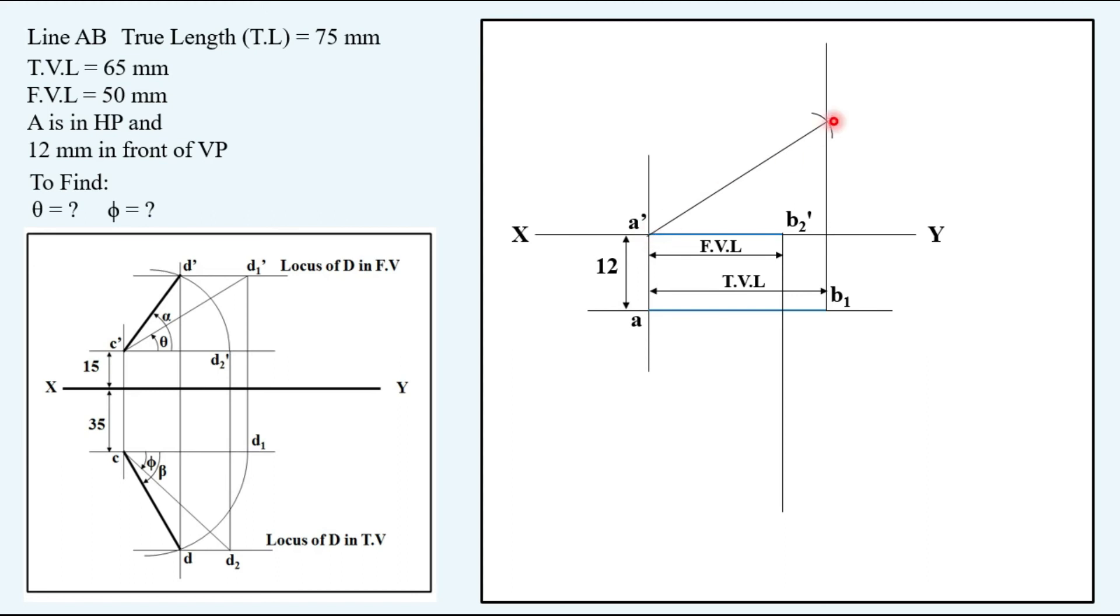Corresponding point name here, so we can see from the reference it was D1' in the earlier solution. Here it will be B1'. Then keeping the compass at A, cutting an arc on this vertical projector, joining it, corresponding name will be B2.